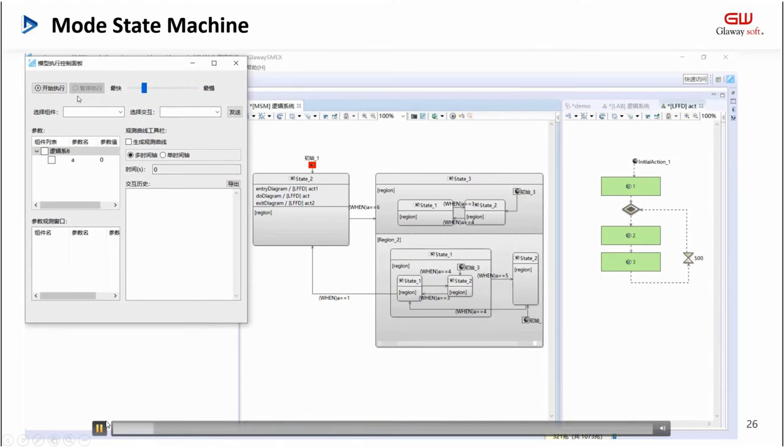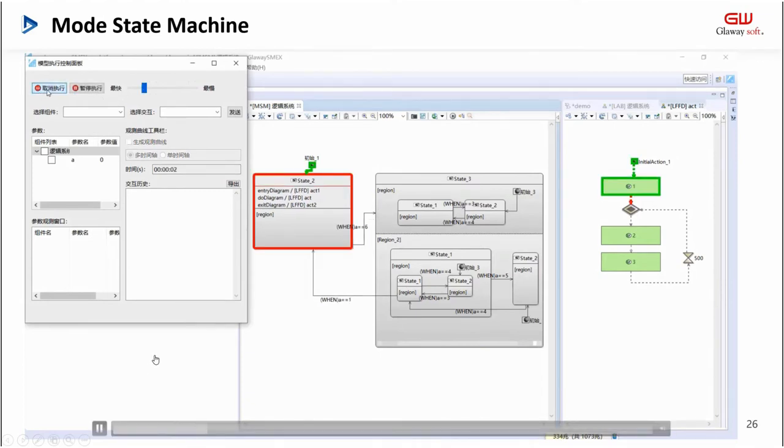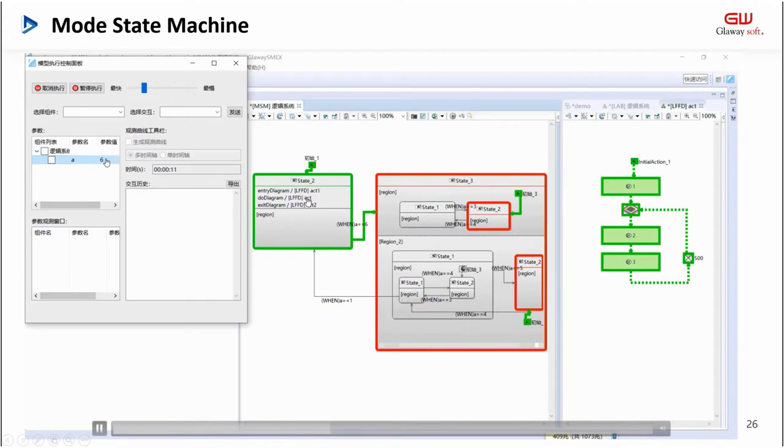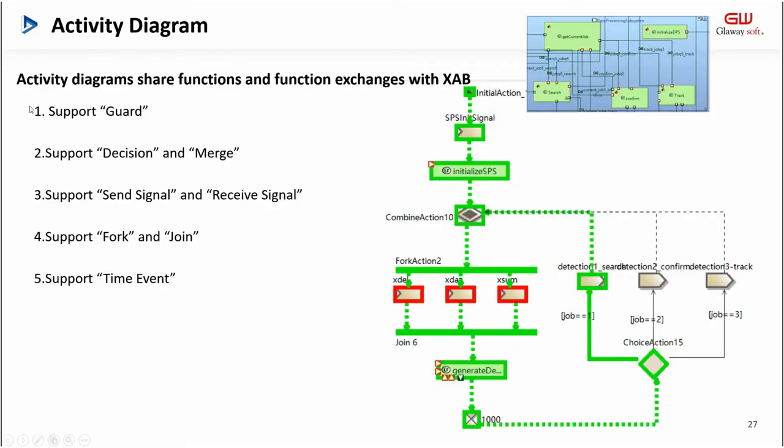In order to observe, I slow down the simulation speed before the simulation starts. Then start simulation. We can see the simulation starts to execute and call the activity diagram. Because the activity diagram does not have a terminal node, it is constantly being executed. And when I modify the simulation parameters through the parameter list to trigger the change event A equals 6, the activity chart is interrupted. And the state machine executes the exit behavior and the transition to the new state. After that, I triggered a series of state transitions by changing the value of A.